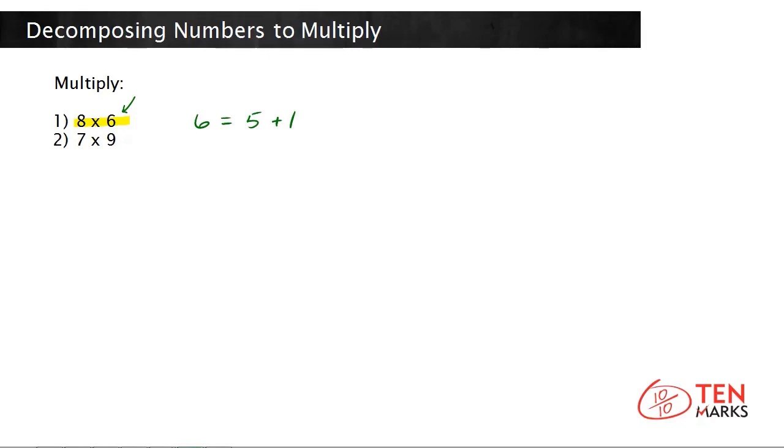Using this information, rewrite 8 times 6 using the distributive property. So what you would do is you would multiply 8 times 5 plus 1, which you know is equivalent to 6. To use the distributive property to multiply, make sure that you multiply 8 by both addends inside the parentheses. So you multiply 8 by 5 and also 8 times 1. 8 times 5 plus 8 times 1.